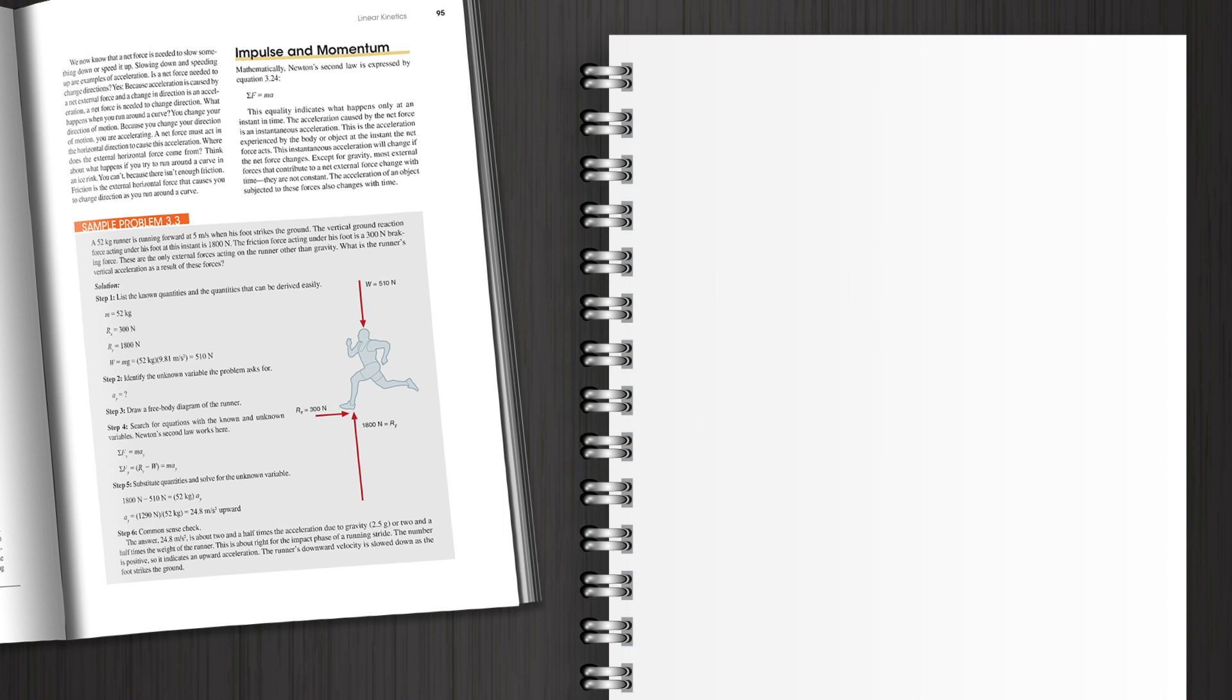Second, let's determine the unknown variable the problem asks for. In this case, it's the runner's vertical acceleration.